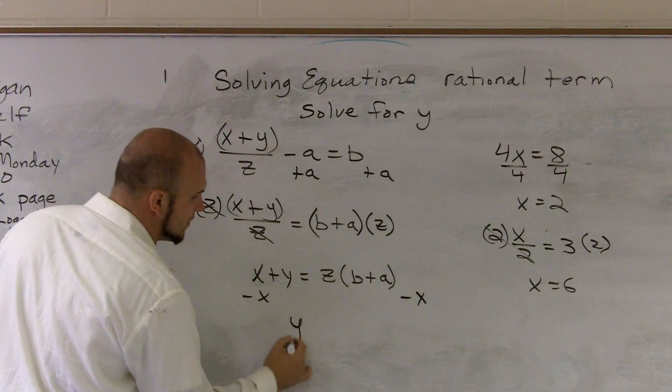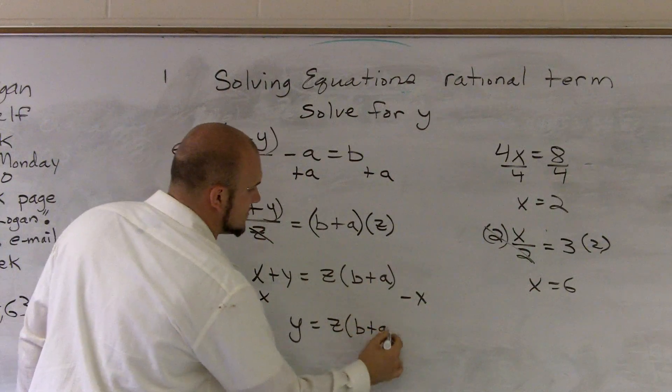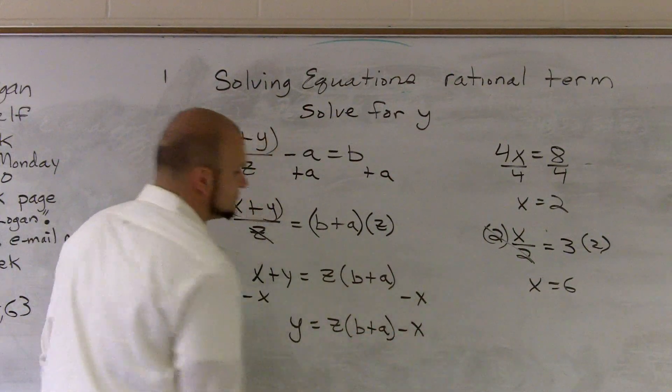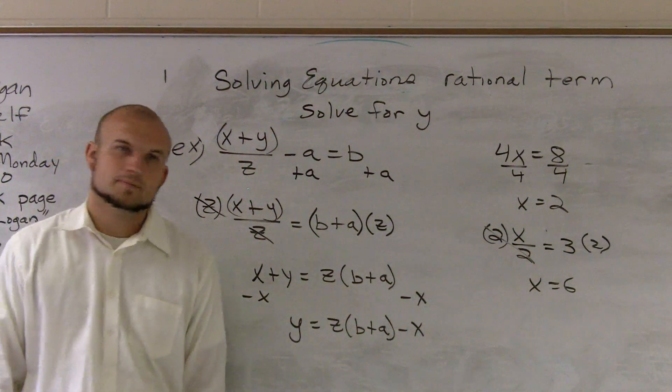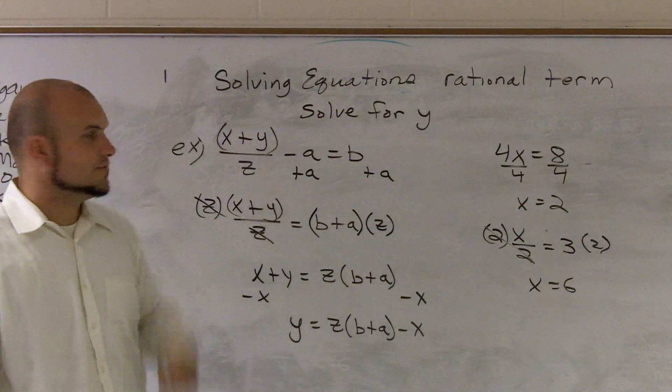My final solution is y equals z times b plus a minus x. And that's how you solve an equation, literal equation, with a rational term.